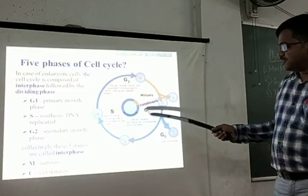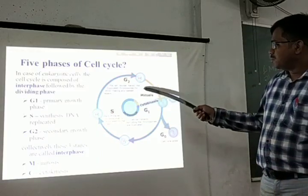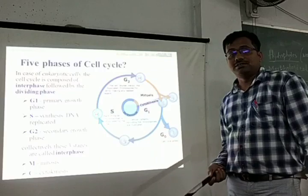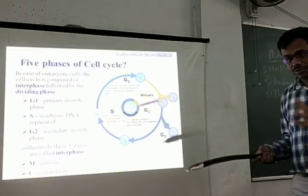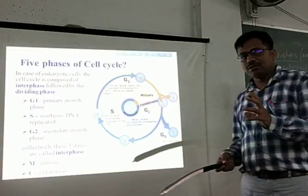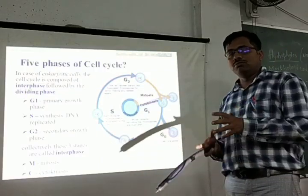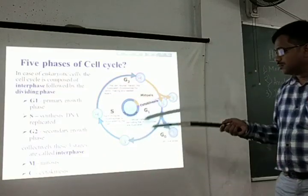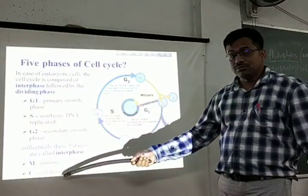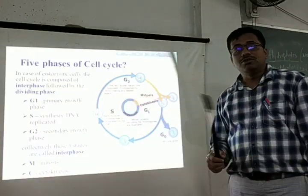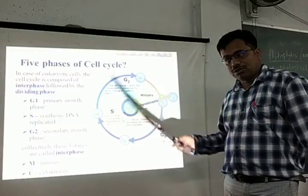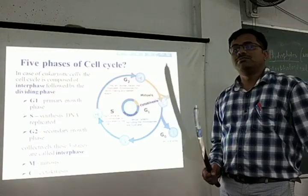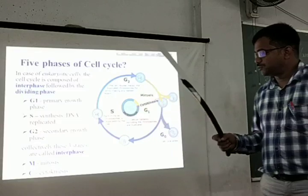The next phase is the mitotic phase, where the cell divides — more precisely, the nucleus divides to form two nuclei. The last stage is cytokinesis, where the cytoplasm of the cell divides and ultimately two daughter cells are produced.